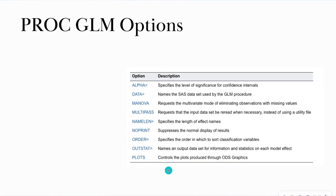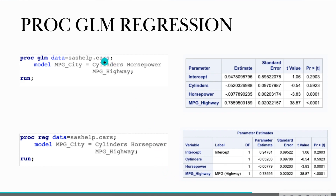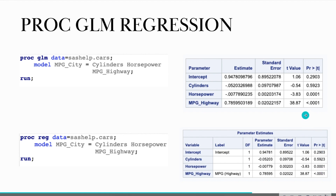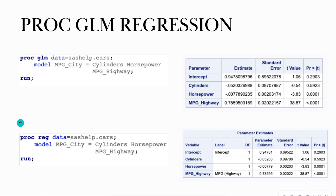I ran a regression analysis using two different procedures. In PROC GLM, I'm using the MODEL statement to predict miles per gallon in the city from continuous variables — cylinders, horsepower, and miles per gallon highway — and I get coefficients and p-values. I ran the same model using PROC REG and got the same estimates and p-values. For a regression analysis, I highly recommend using PROC REG — it's more efficient and also gives you nice diagnostic plots, which we'll see in SAS Studio.